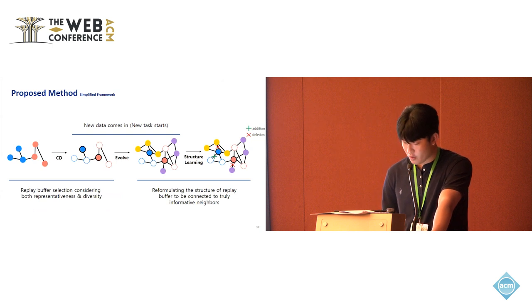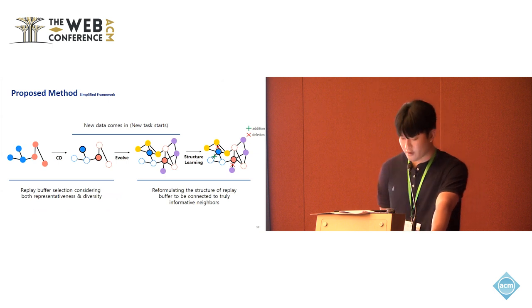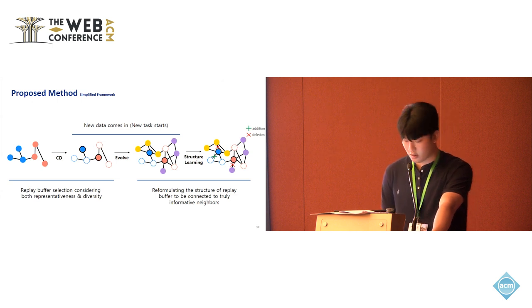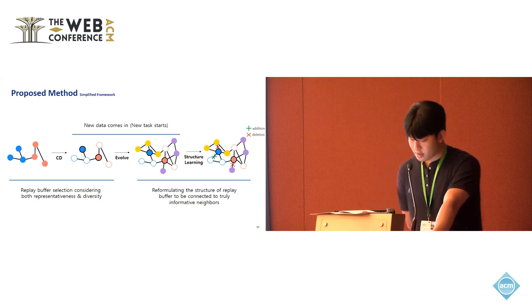The simplified framework is as follows. We utilize CD to select a representative and diverse replay buffer. As a new task begins, the graph evolves, and subsequently, we conduct structural learning on the selected replay buffer to connect truly informative neighbors and then perform the downstream tasks such as node classification. And this process is repeated as tasks continue to progress.